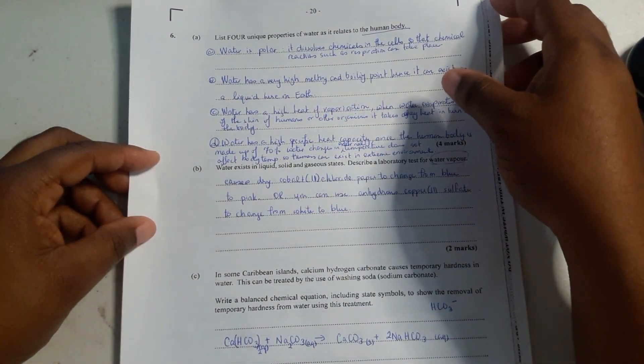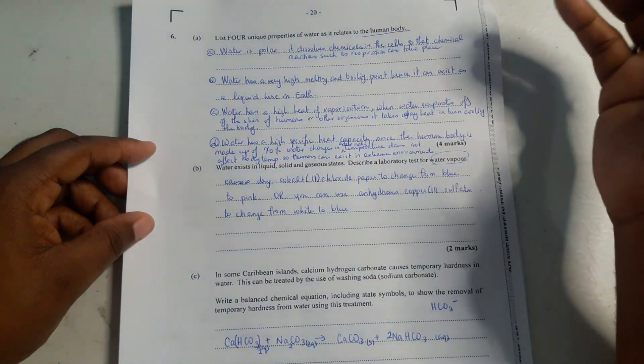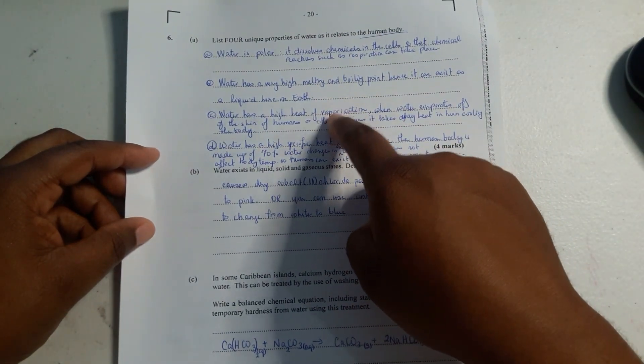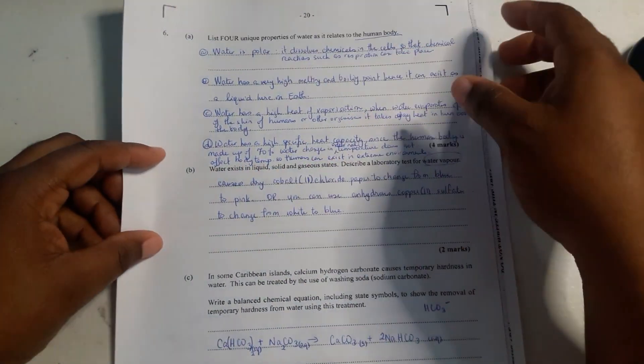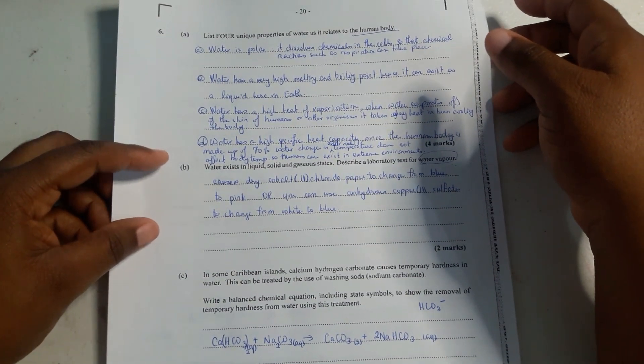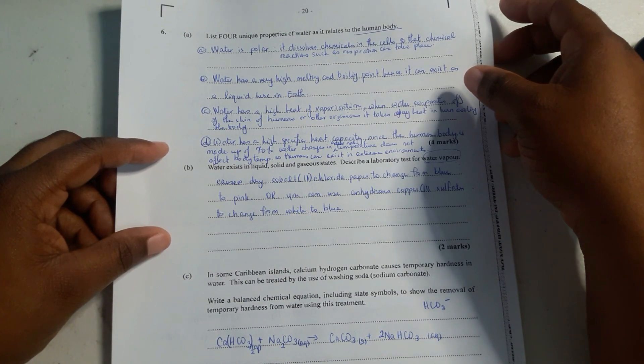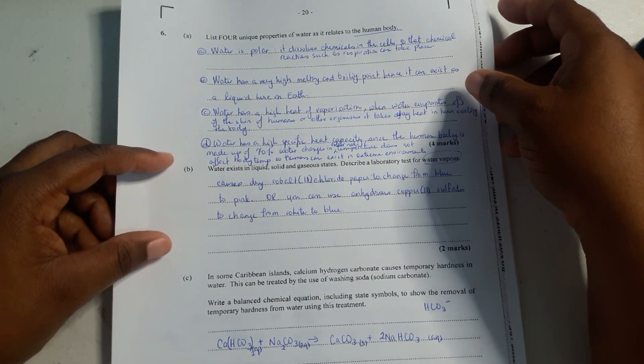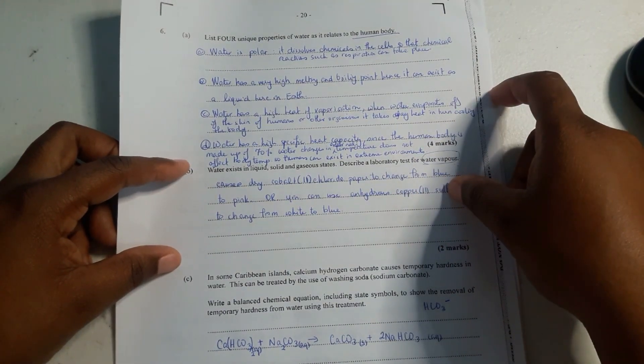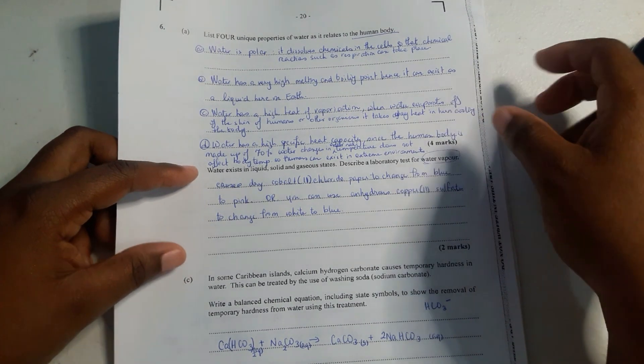Then (c) Water has a high heat of vaporization. When water evaporates off the skin of humans or other organisms, it takes away heat, thus cooling the body. In other words, because of this property we do not overheat. (d) Water has a high specific heat capacity. Since the human body is made up of 70% water, changes in external temperatures does not affect body temperature, so humans can exist in extreme environments.